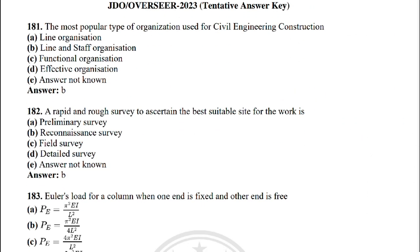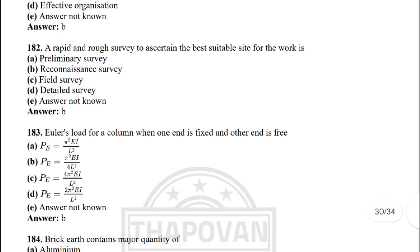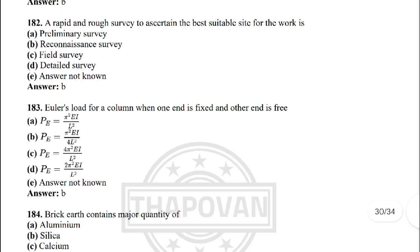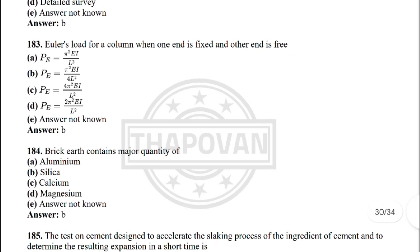Next: the most popular type of organisation used for civil engineering construction — option B: line and staff organisation. Next: a rapid and rough surface survey to ascertain the best suitable site for the work is — the correct answer is option B: reconnaissance survey.